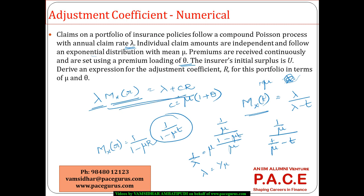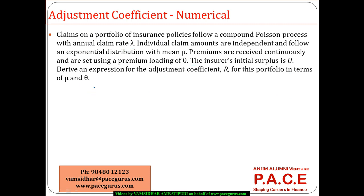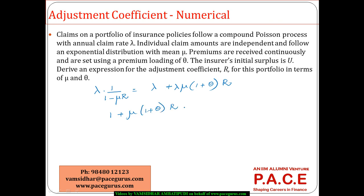Now I can write the adjustment coefficient equation: lambda times M_X(r) equals lambda plus c*r. Substituting M_X(r) = 1/(1 minus mu*r) and c = mu*(1 + theta)*lambda, the equation becomes lambda/(1 minus mu*r) equals lambda plus lambda*mu*(1 + theta)*r, which simplifies to 1/(1 minus mu*r) equals 1 plus mu*(1 + theta)*r.